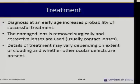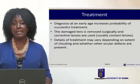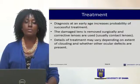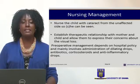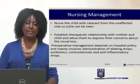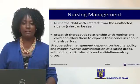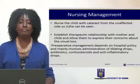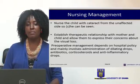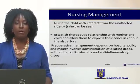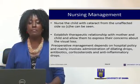Treatment: Diagnosis at an early age increases the probability of successful treatment. The damaged lens is usually removed and a corrective artificial lens is placed in. Sometimes the child may use external glasses or spectacles, and intraocular lenses may also be placed internally. Nurses should care for the child from the unaffected side so the child can see and interact during care. It is important to establish a therapeutic relationship with the mother and child to allow them to express concerns about visual loss, and to show them cases of patients who have had surgery successfully.